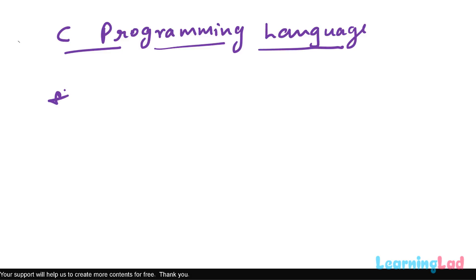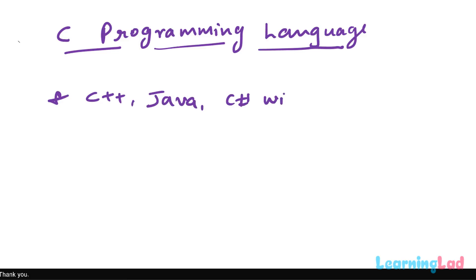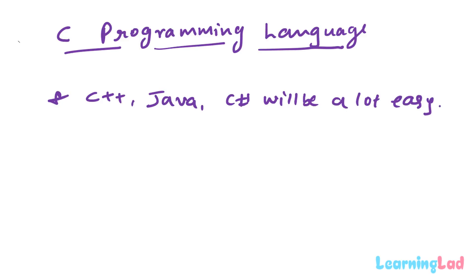If you learn C, then learning languages like C++, Java, or C# will be a lot easier, because knowing C gives you a better understanding of basic programming concepts. These languages use an object-oriented programming approach, and knowing C makes learning object-oriented programming much easier. Also, major parts of many modern programming languages are written in C, and these languages take many features from C — that's why C is also called the mother of all languages.